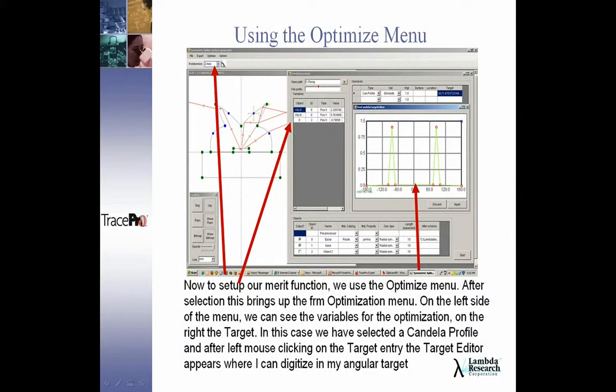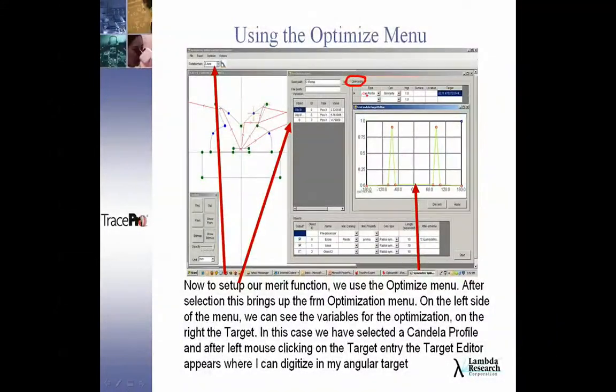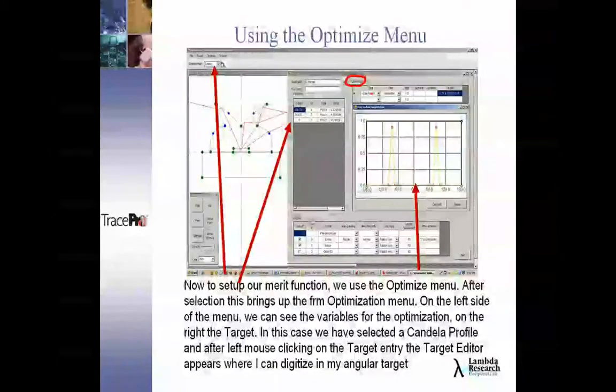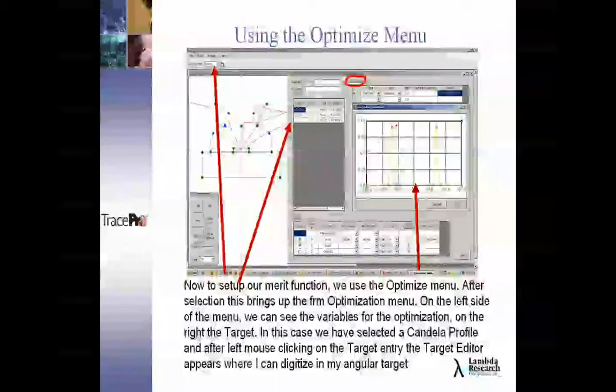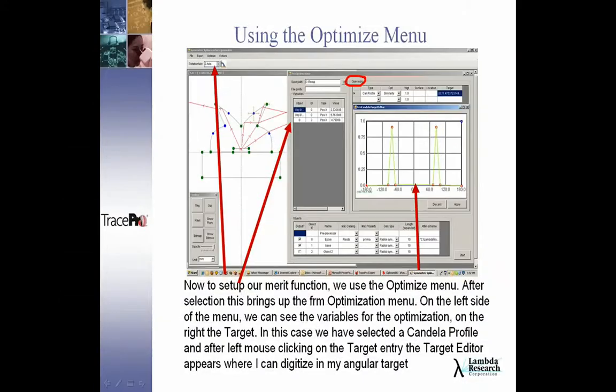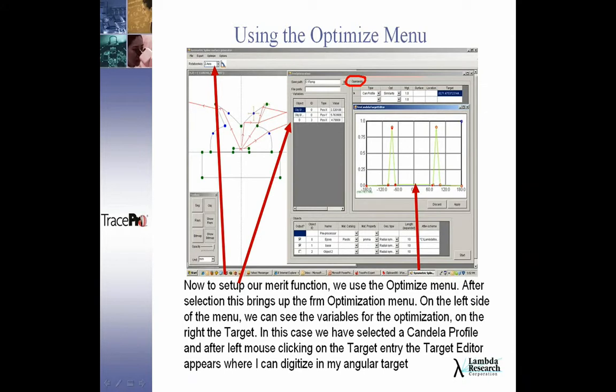I can then have a spreadsheet. Over here it says where do you want to save the files while you do this iteration. But there's an operand section, and this operand section allows me to specify a Candela profile target. I'm specifying Candela profile target that's similar to what I digitized in when I clicked on the target value. This digitized dialog showed up, and I can use the mouse to just click on these points, and the program will create this particular merit function for me.